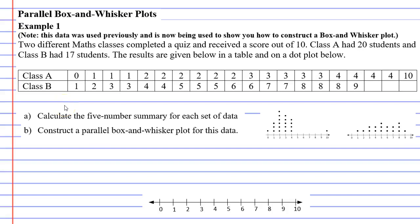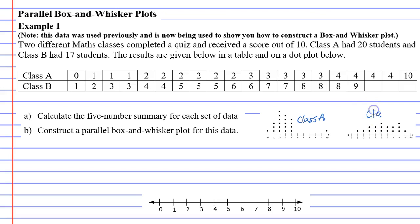We're on to example one and I want to point out that we've used this data in an earlier example. We're using it because we want to see what it looks like when we do a box and whisker plot. Two different maths classes completed a quiz and received a score out of 10. Class A had 20 students and class B had 17 students. The results are given in a table and on a dot plot below. This dot plot represents class A and this one represents class B. We don't really need the dot plots — they're just there so you've got another way of looking at this data.